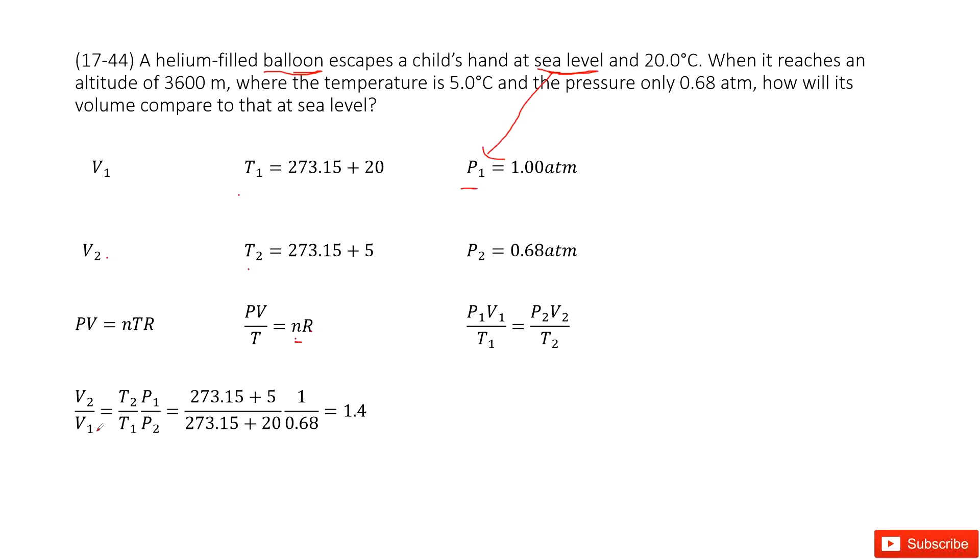And therefore, we can get the function for ratio. V2 divided by V1 equal to this one. Input known quantities. Get the answer there. Thank you.